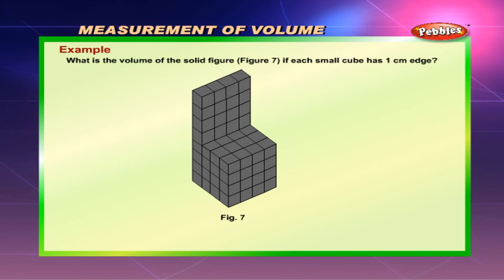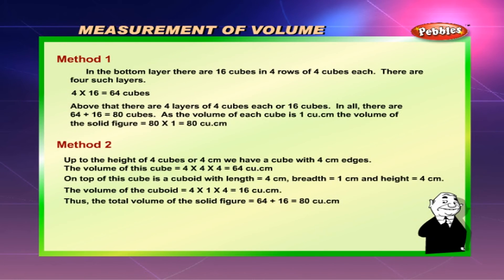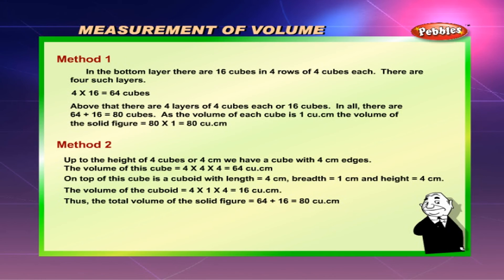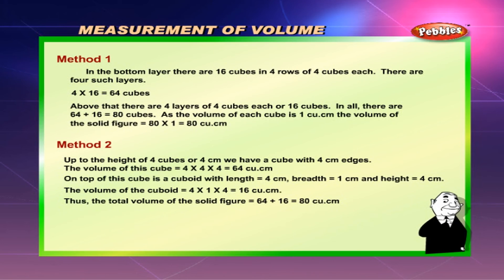Example: What is the volume of the solid figure if each small cube has a one centimetre edge? Method 1: In the bottom layer, there are 16 cubes in four rows of four cubes each. There are four such layers — 4 into 16 equals 64 cubes. Above that, there are four layers of four cubes each, or 16 cubes. In all, 64 plus 16 equals 80 cubes. As the volume of each cube is one cubic centimetre, the volume of the solid figure equals 80 into 1, which equals 80 cubic centimetres.